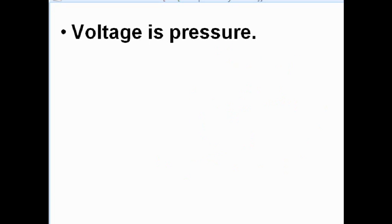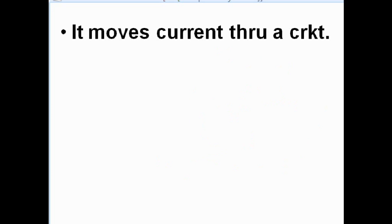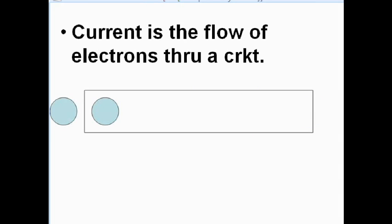Voltage is pressure. It moves current through a circuit. Current is the flow of electrons through a circuit.